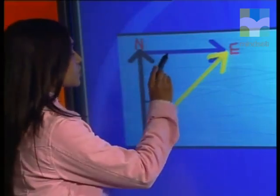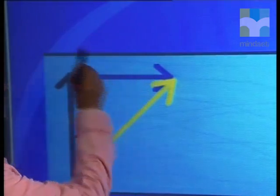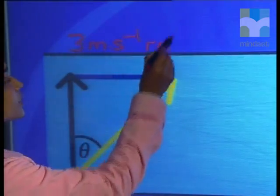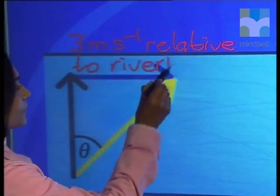We know that the river flows downstream at three meters per second to the east. Someone standing on the bank will notice this motion. However, someone floating down the river watching the water would think the water is not moving — they would notice no relative motion. So according to the observer floating downstream the velocity of the water would be zero meters per second, but to someone on the bank it would be three meters per second downstream. We label the blue vector as the velocity of the water relative to the river bank, or relative to a fixed stone on the river bed.